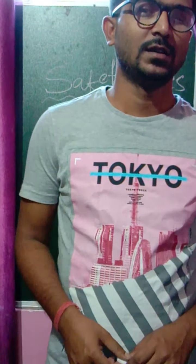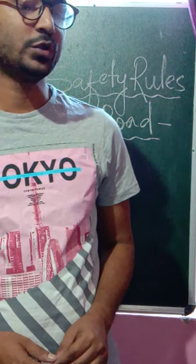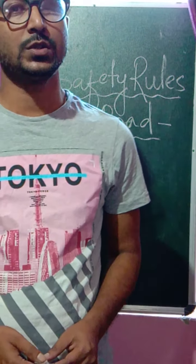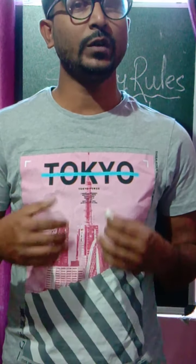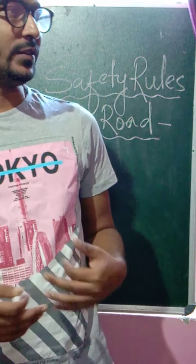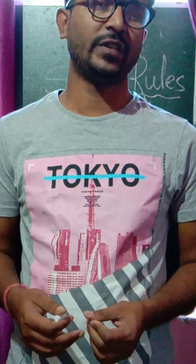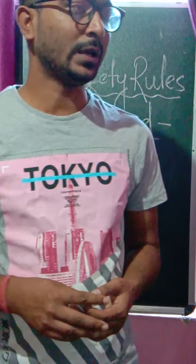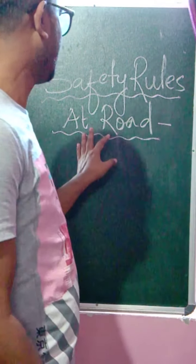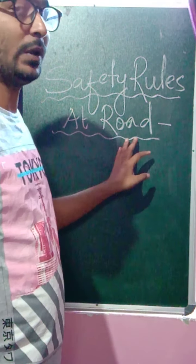Good morning students. Today we are going to continue with our chapter regarding safety rules, in which we understood what is the importance of being safe, why it is required that we should keep ourselves safe and do things as per what has been instructed to us, or what we know is good and bad. We studied various different places — being at home, being at school — and today in continuation we are going to learn about the things important for being safe when we are on roads.